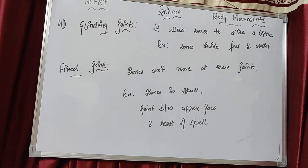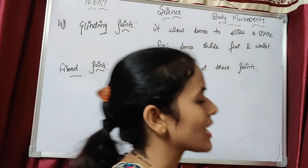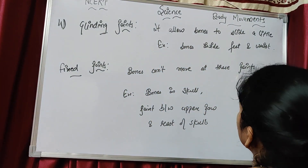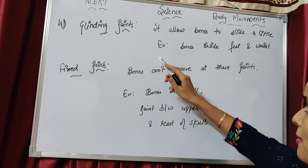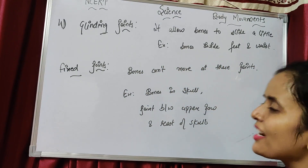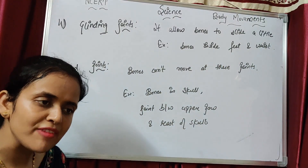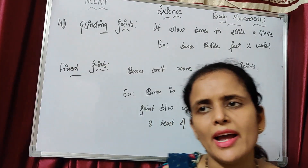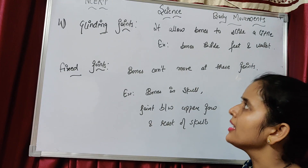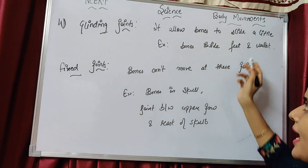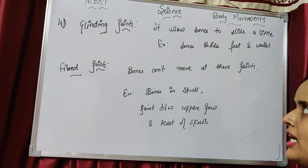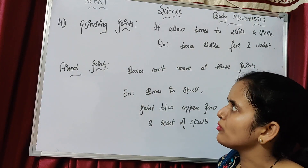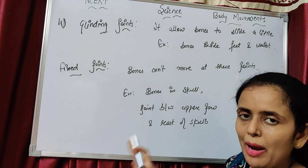The last movable joint is the gliding joint. It allows bones to slide a little from their place. Example: bones inside the feet and wrist. These bones can slide slightly by pushing or due to some accident. That is the gliding joint — remember this as a knowledge point.